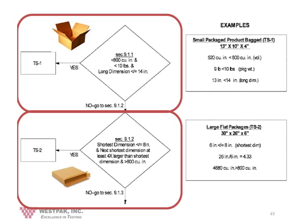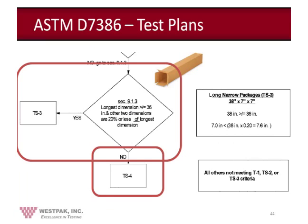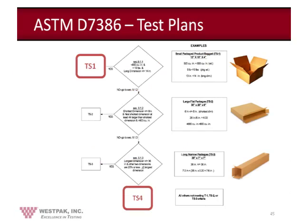If one criterion for TS2 is false, you go to Test Plan TS3: the package needs the longest dimension greater than or equal to 36 inches, and the other two dimensions 20% or less of the longest dimension — this is a long, narrow box. If any other criterion is false, it defaults to Test Plan TS4, which is for all other packages. We use the external dimensions of the package to determine the test plan. Due to package geometry, the two most popular test plans customers use are TS1 and TS4 — the small and all-other packages.